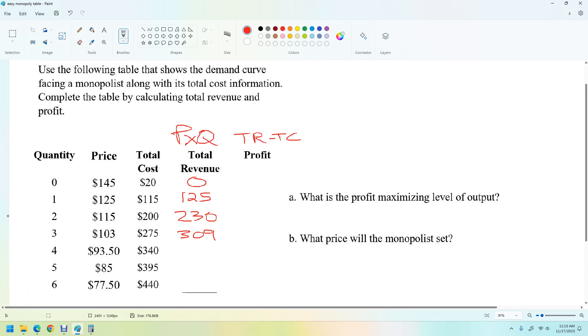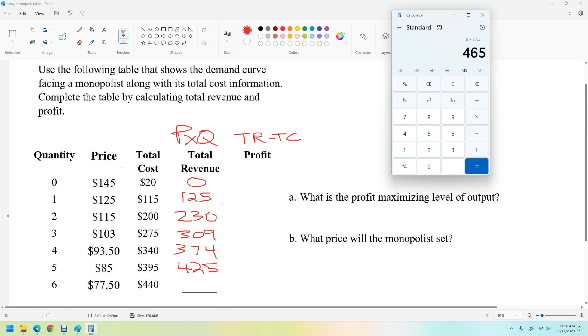This one is $309. Here's where we went awry. It's $93.50 times four, so that's 374. And I did this one earlier, but I've forgotten. So five times 85, 425. And then six times 77.50, 465.